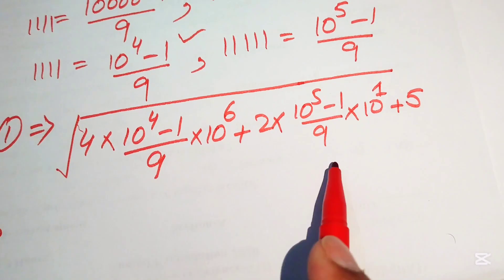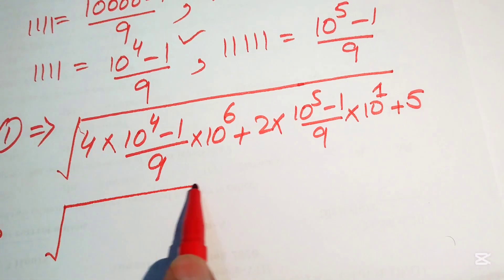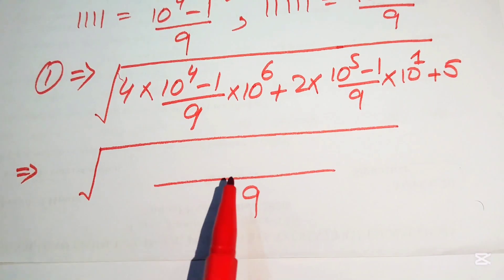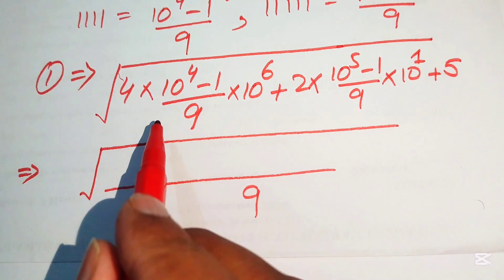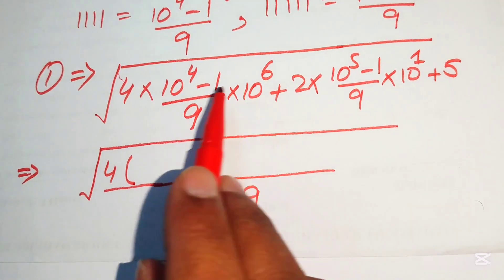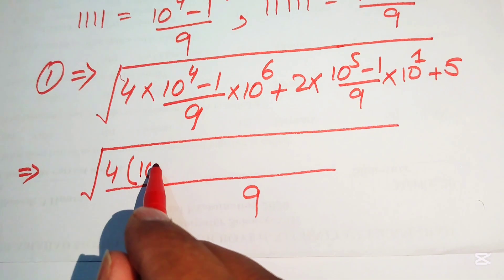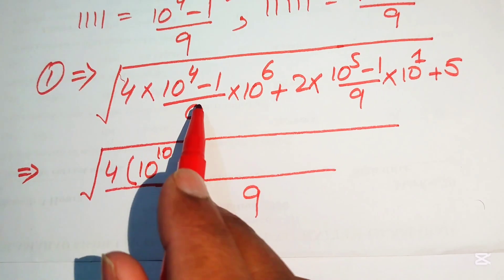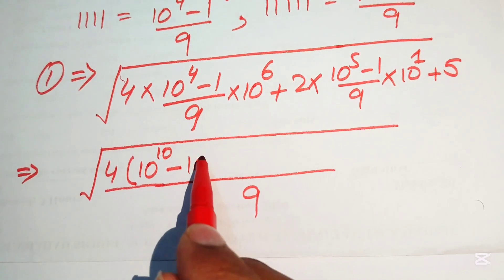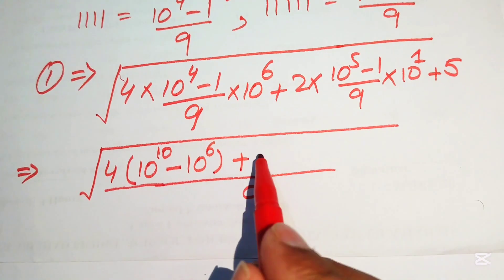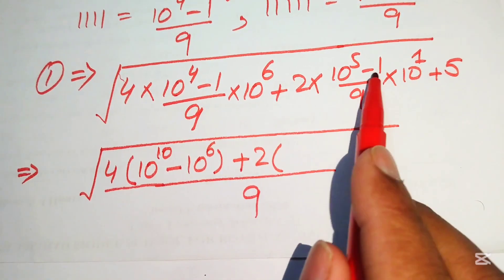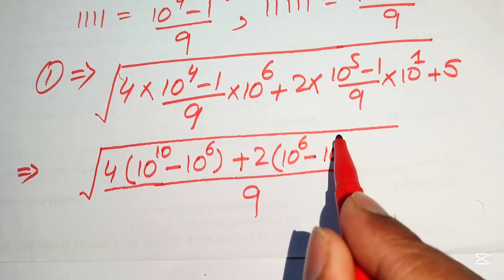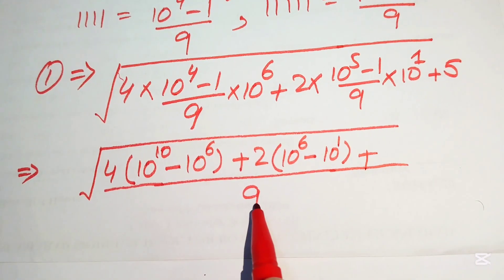We simplify by cancelling the 9s. Distributing 10^6: we get 10^4 × 10^6 = 10^10, minus 10^6. Distributing 10^1 on the second term gives 10^5 raised to power 6 minus 10^1, and we note that 9 × 5 = 45.